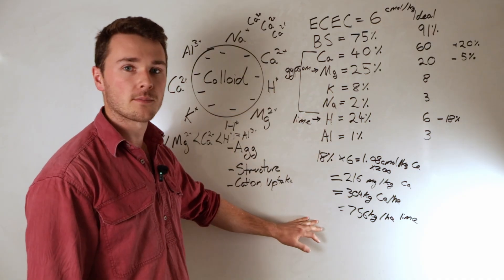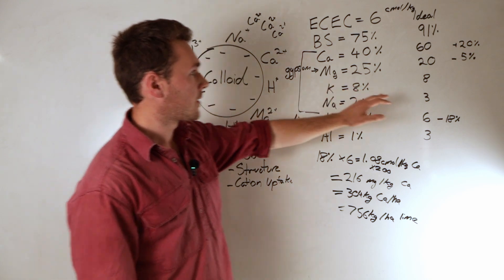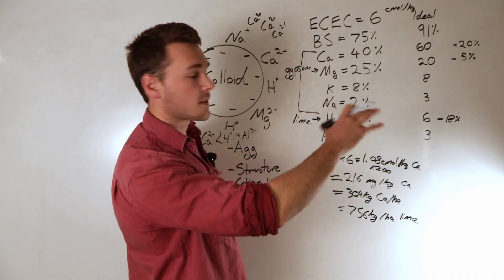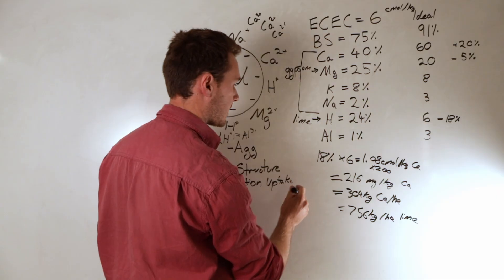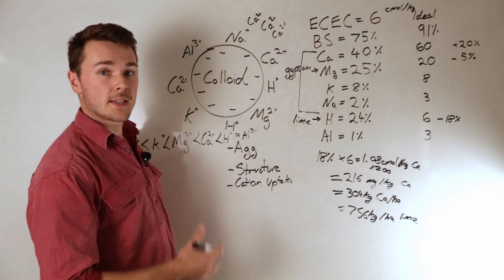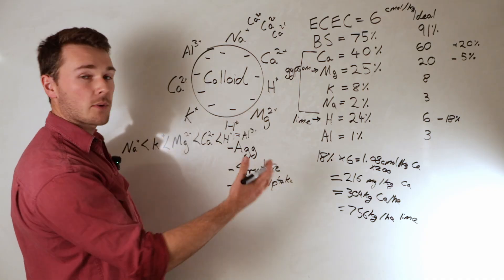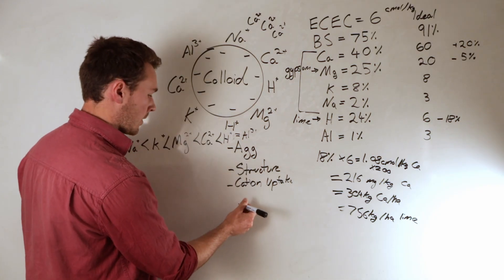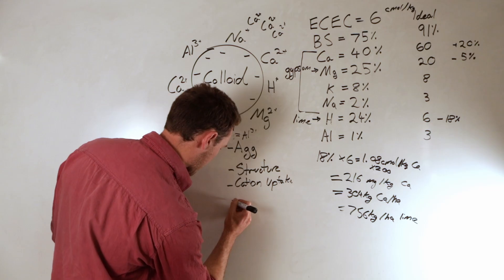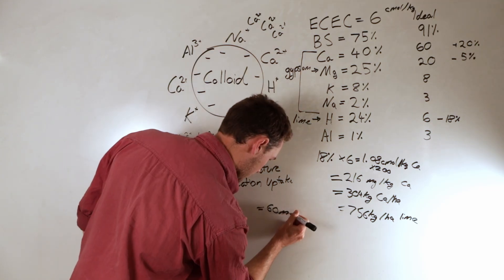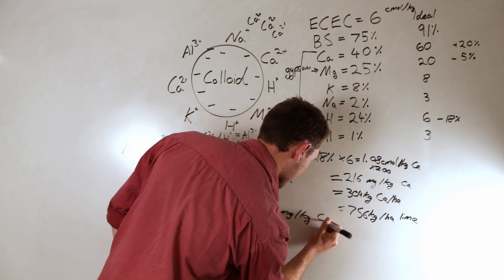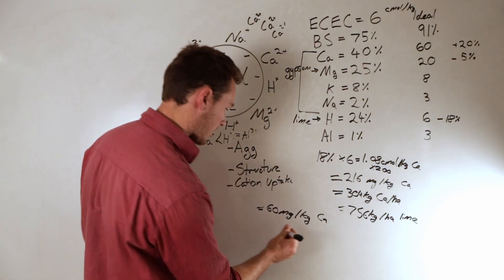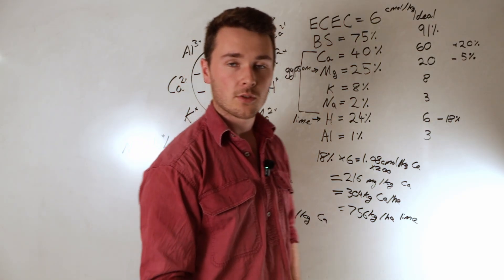So you might then divide that again by 95% to consider the neutralizing value. That would be theoretically enough lime to displace the hydrogen. Might be a bit more because there's going to be a bit more hydrogen in the soil solution which will then go back to the colloid. And so you might need to address this again in three years time. That is just for the hydrogen. For magnesium, same calculation, but then we're going to convert it into gypsum rather than lime. So we're going to use 5% because we want to reduce this by 5%.